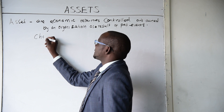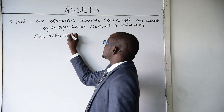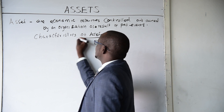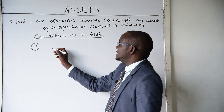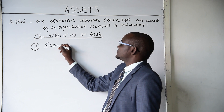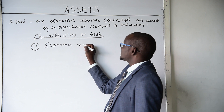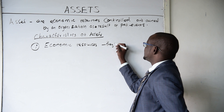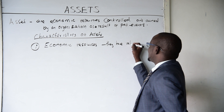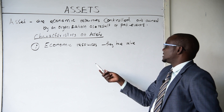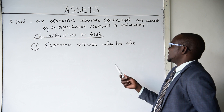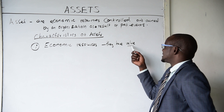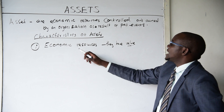Let's look at the characteristics of assets. Assets have three main characteristics. One is that assets are economic resources — that is, they have value. When you dispose of assets, you can actually get some value, some funds out of these assets. So we say they are economic resources.